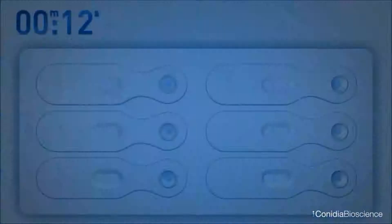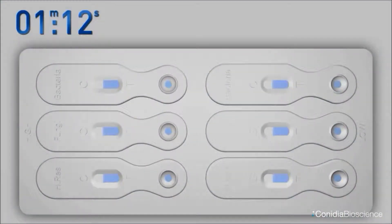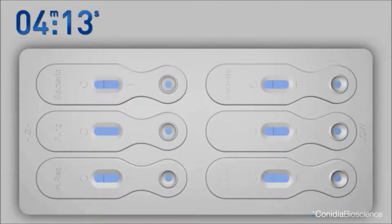If any of the six red control lines are not visible, the test is not valid, irrespective of any test lines appearing.